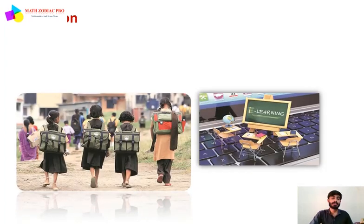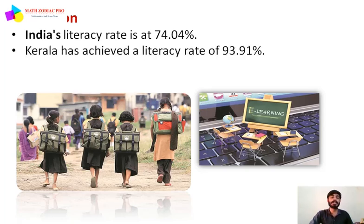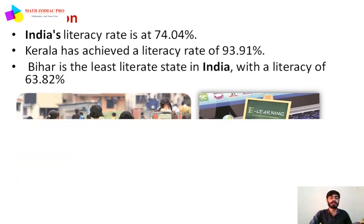Next is education statistics. India's literacy rate is at 74.0 percent. The best performing state, Kerala, has achieved a literacy rate of 93.91 percent, while Bihar is the least literate state in India with a literacy rate of 63.82 percent.